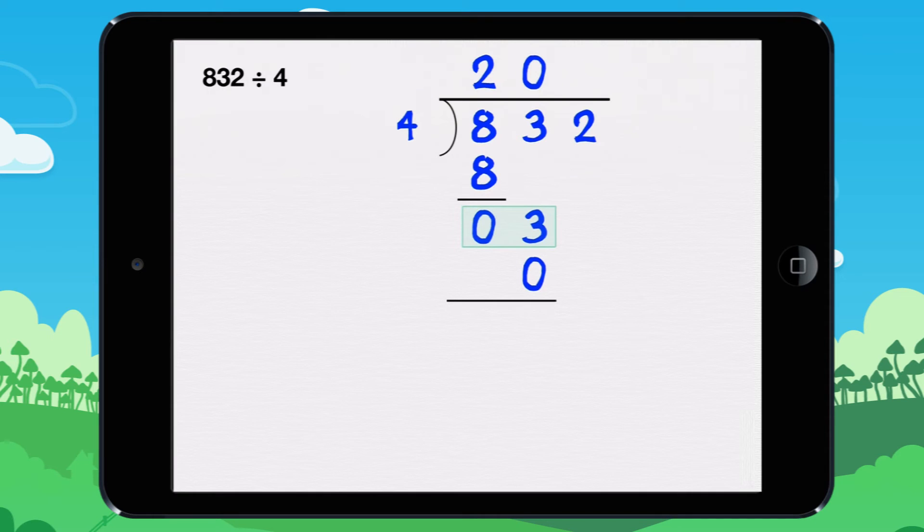We need to find the remainder. 3 minus 0 equals 3. The remainder is 3.